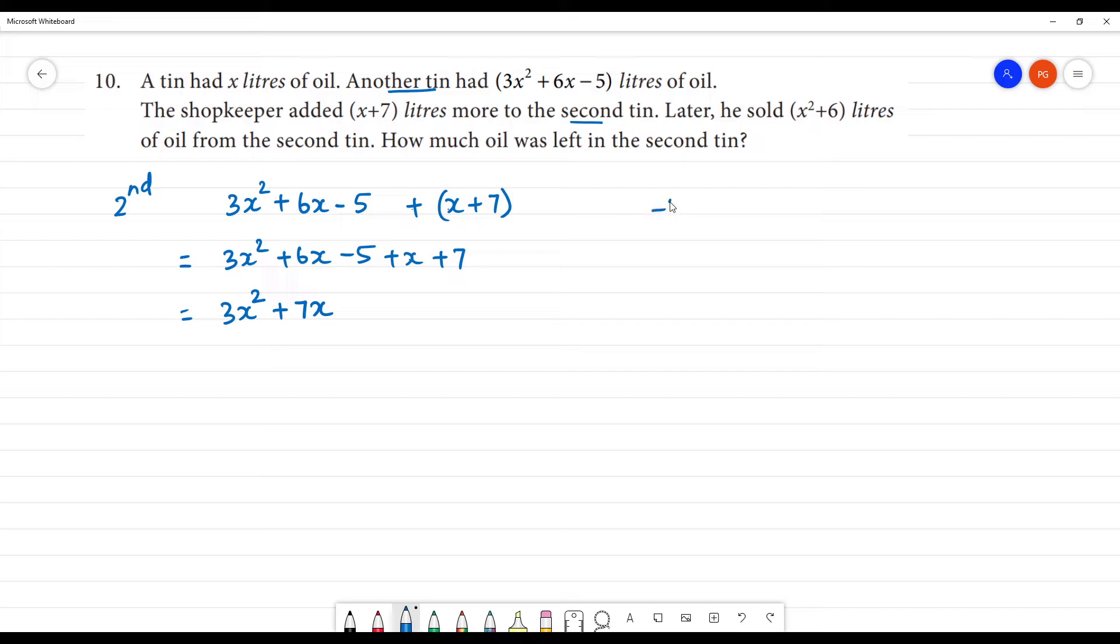Here we have minus 5 and 7. So, 7 minus 5 is 2. So, this is plus 2.